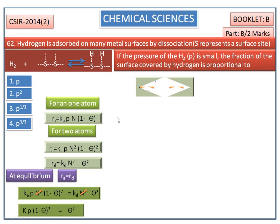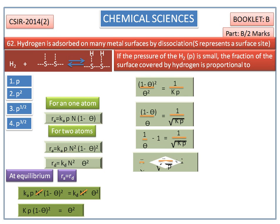By solving this equation, we get a θ value of √(KP) divided by √(KP) plus 1.